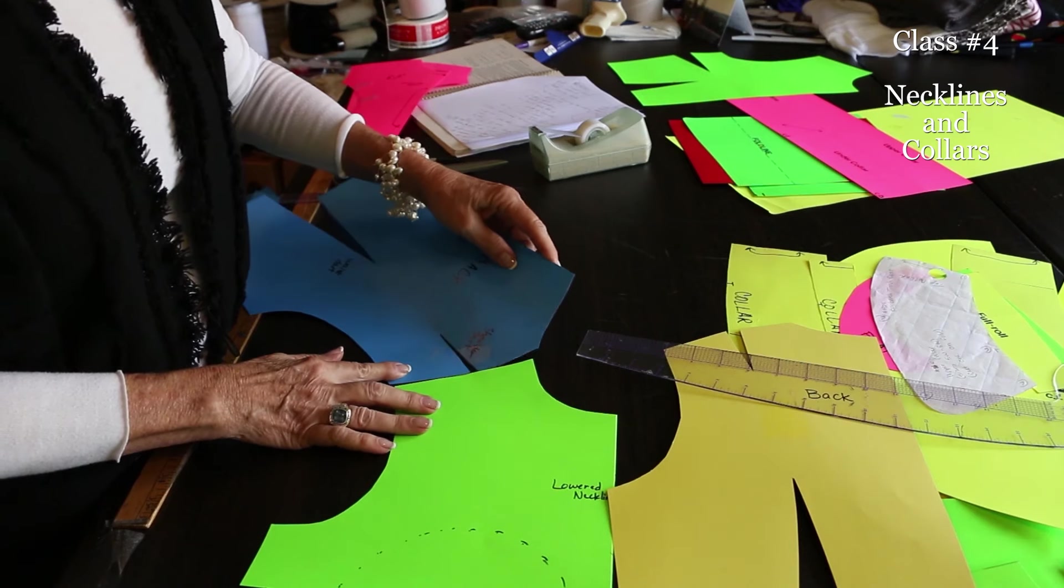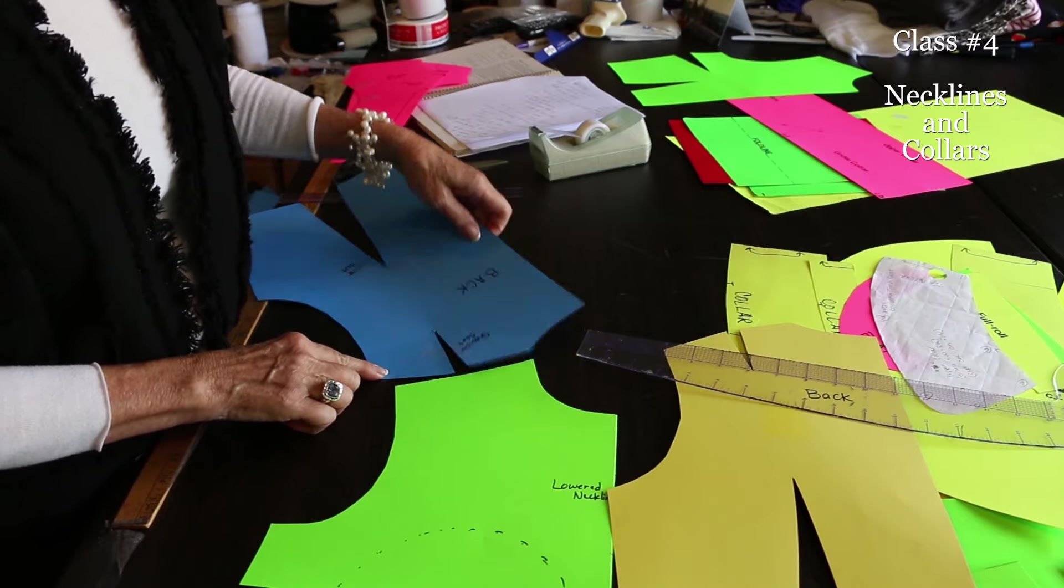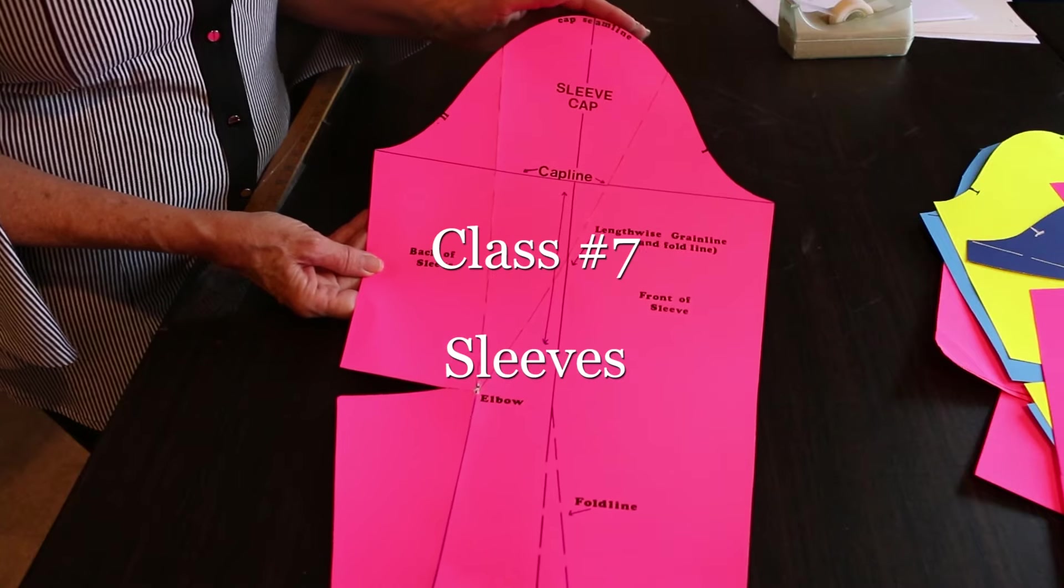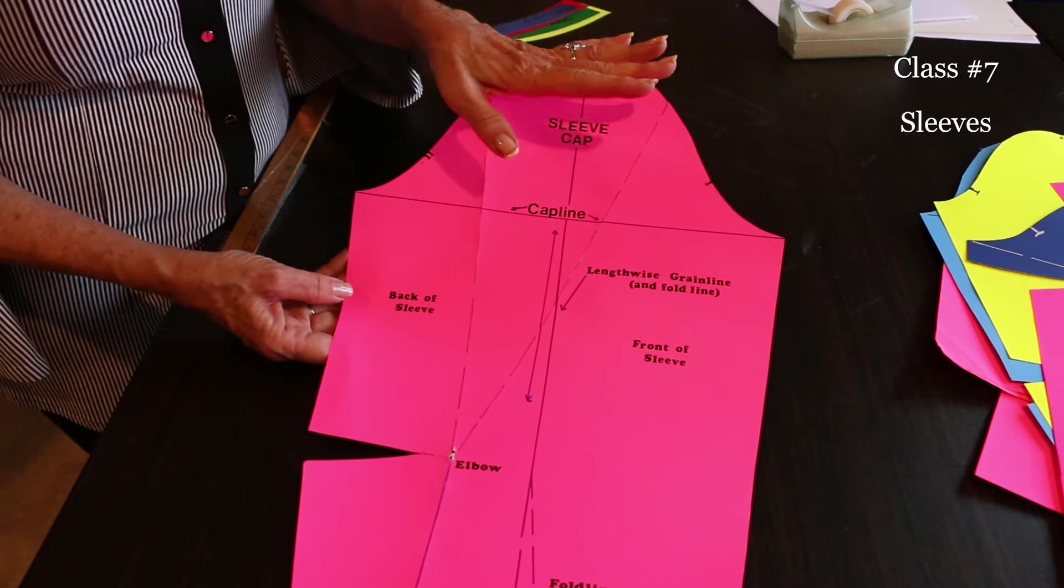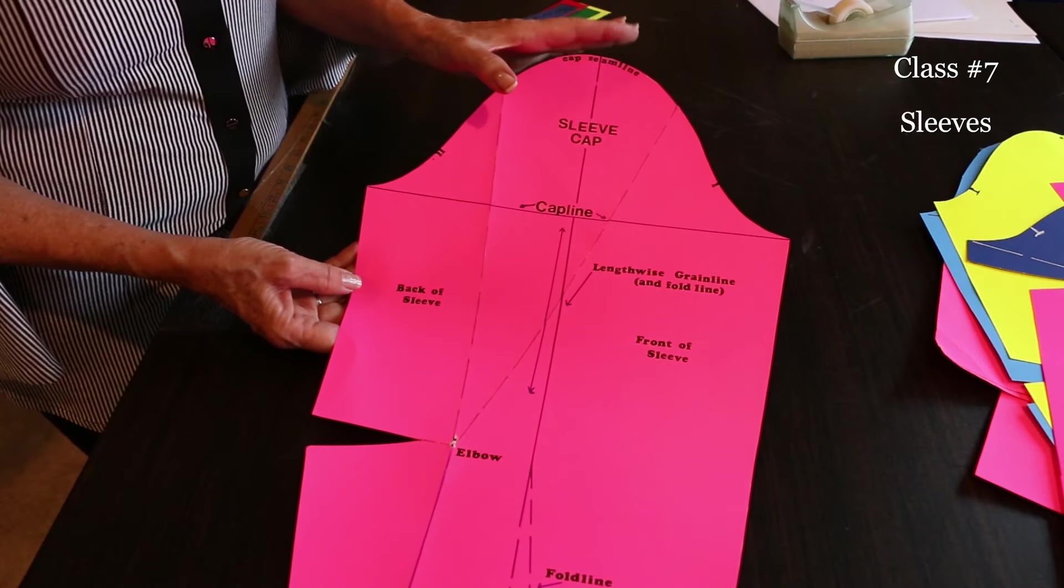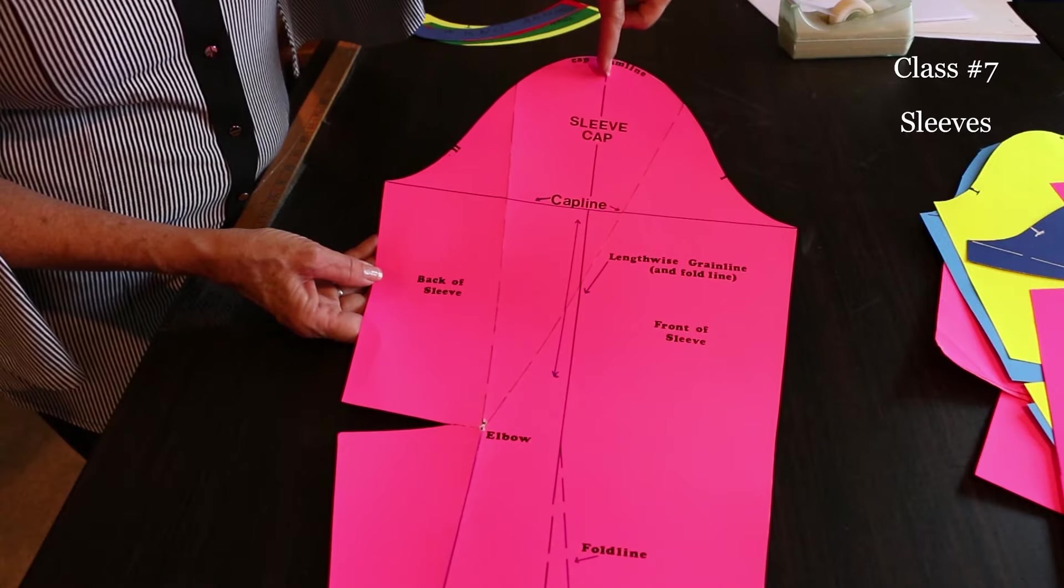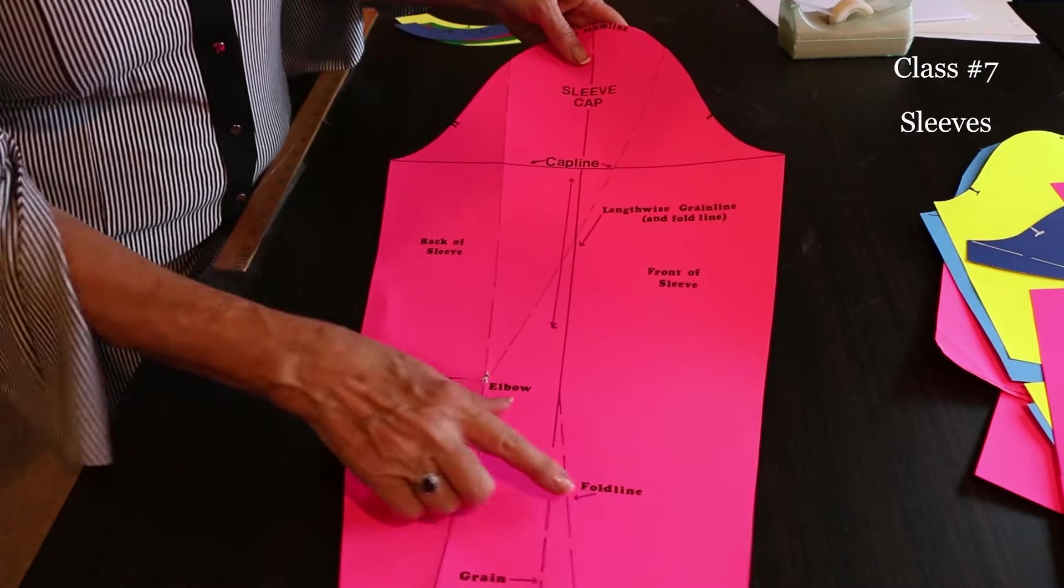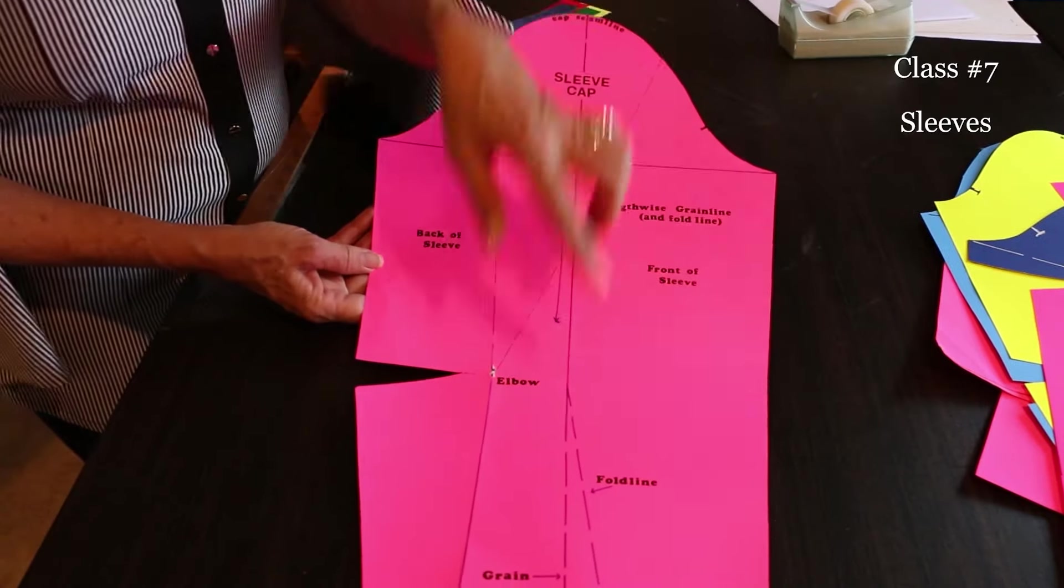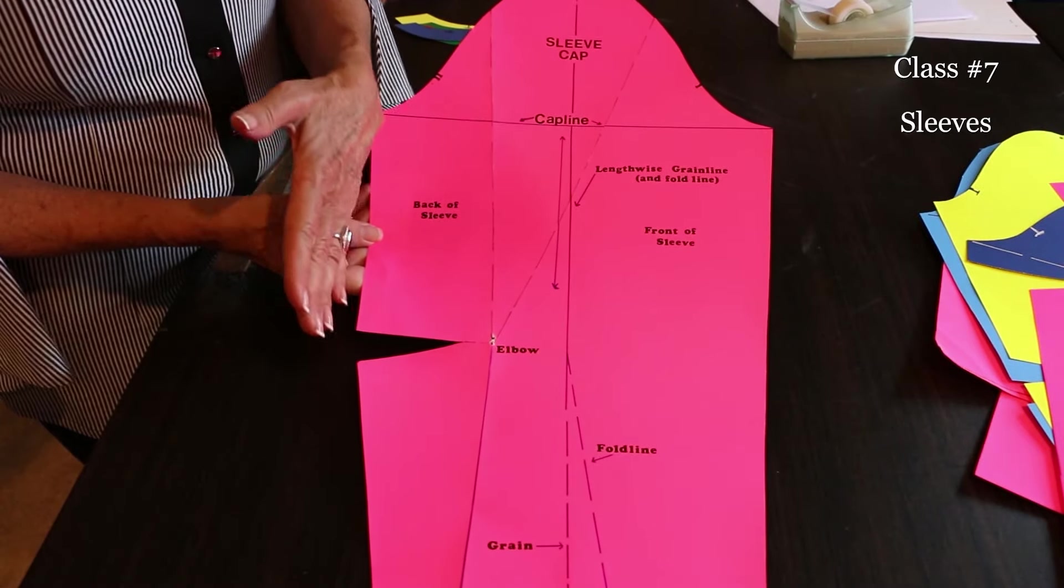When I put these two into play and close that up, I want you to understand the positioning of this back dart. Then we have the cap seam line. The cap seam line is what sews into the garment, that's where all the easing takes place. The distance between the cap line and the cap seam line is called the cap height. And then you've got the body of the sleeve. The center of the cap here and perpendicular to the cap line is the grain line.